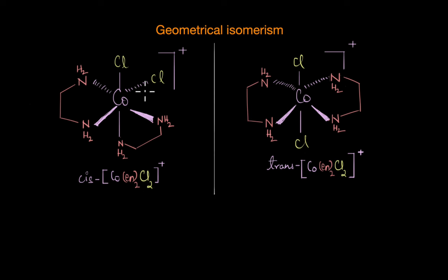Here we have cobalt ion coordinated by two ethylenediamine bidentate ligands and two chloride ions. In the cis form, the chloride ions are adjacent to each other, whereas in the trans form they are opposite to each other. And how does this affect their behavior?